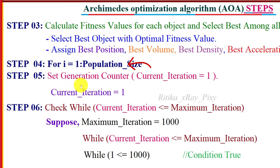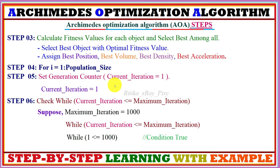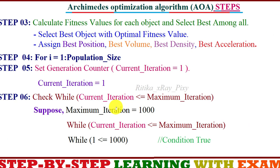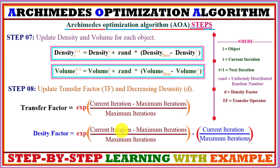In step four, the main loop begins with the counter set to one — the first iteration. We then check the stopping criteria: since maximum iterations is 1000 and the current iteration is 1, the condition (current iteration less than maximum iteration) is true, so we proceed to the next step.